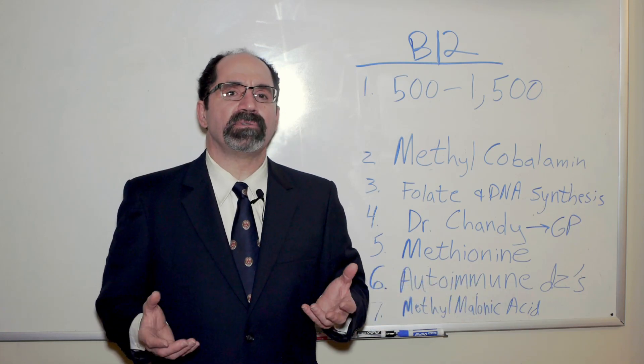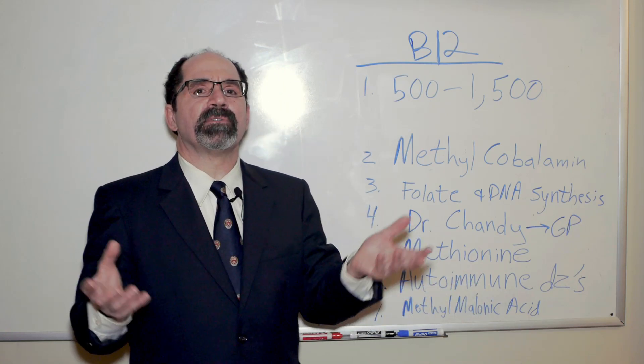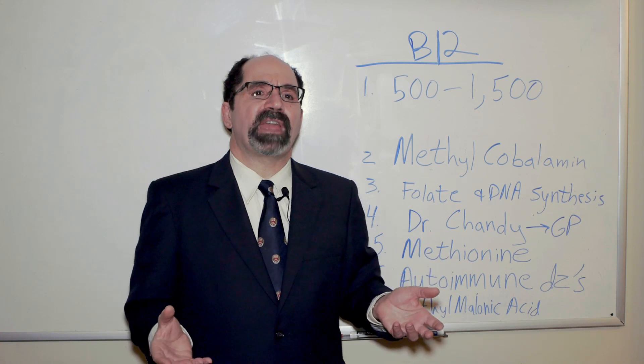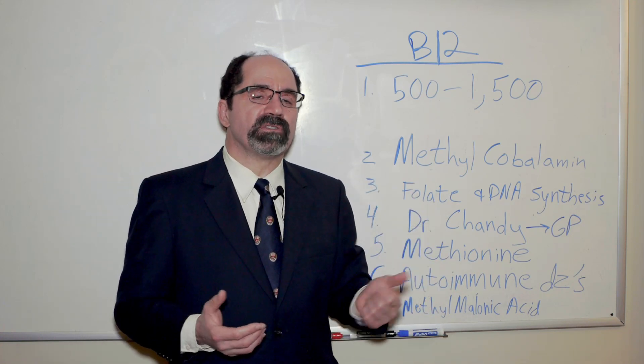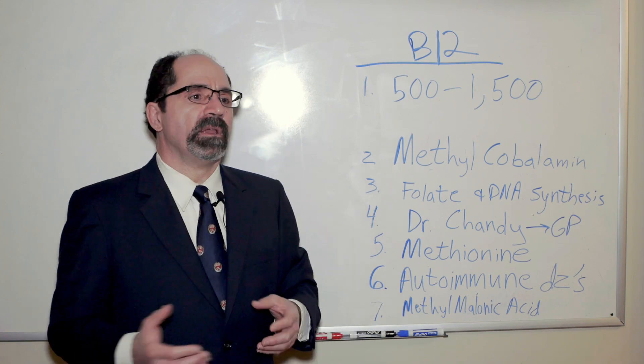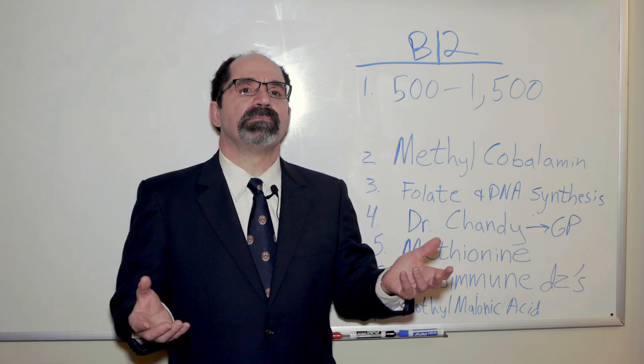Because pernicious anemia is an autoimmune disease, autoimmune diseases are often multiple of them are present simultaneously. And so what does that mean? What it means is if a person has one autoimmune disease, they're at increased risk to have a second one. Some of the more common ones are things like Hashimoto's thyroiditis, which typically leads to hypothyroidism, low thyroid function.